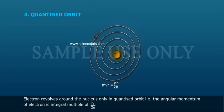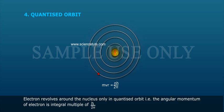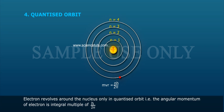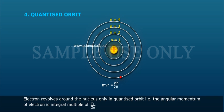Quantized orbit: Electron revolves around the nucleus only in a quantized orbit. That is, the angular momentum of electron is integral multiple of h by 2π.